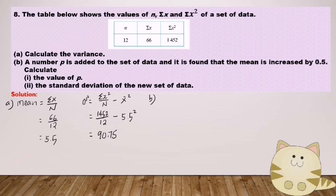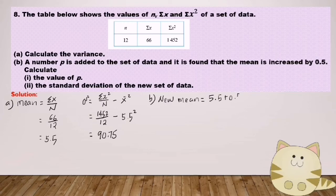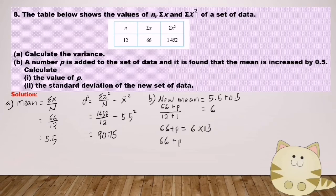A number P is added to the set of data and it is found that the mean is increased by 0.5. Calculate the value of P. The new mean after P is added is 5.5 plus 0.5 equals 6. The original sigma x is 66, and after P is added the number of data is 12 plus 1 equals 13. So 6 equals (66 plus P) over 13, giving 66 plus P equals 78, so P equals 12.